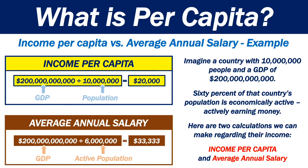Let's look at an example. Imagine a fictitious country has a population of 10 million people and a GDP of 200 billion. 60% of that country's population is economically active — they are actively earning money. Here are two calculations we can make regarding their income: income per capita and average annual salary.